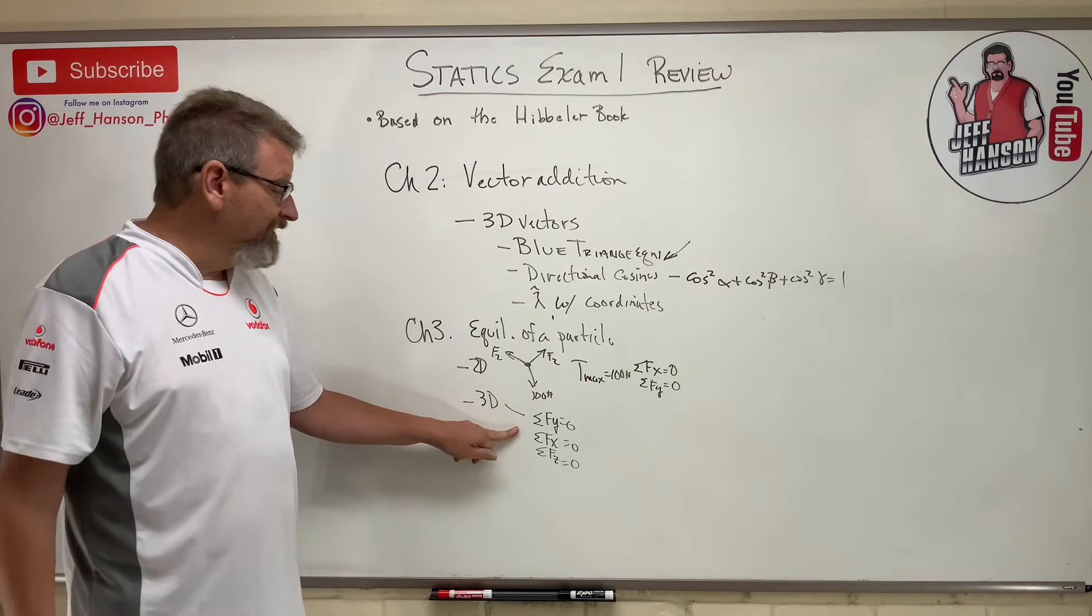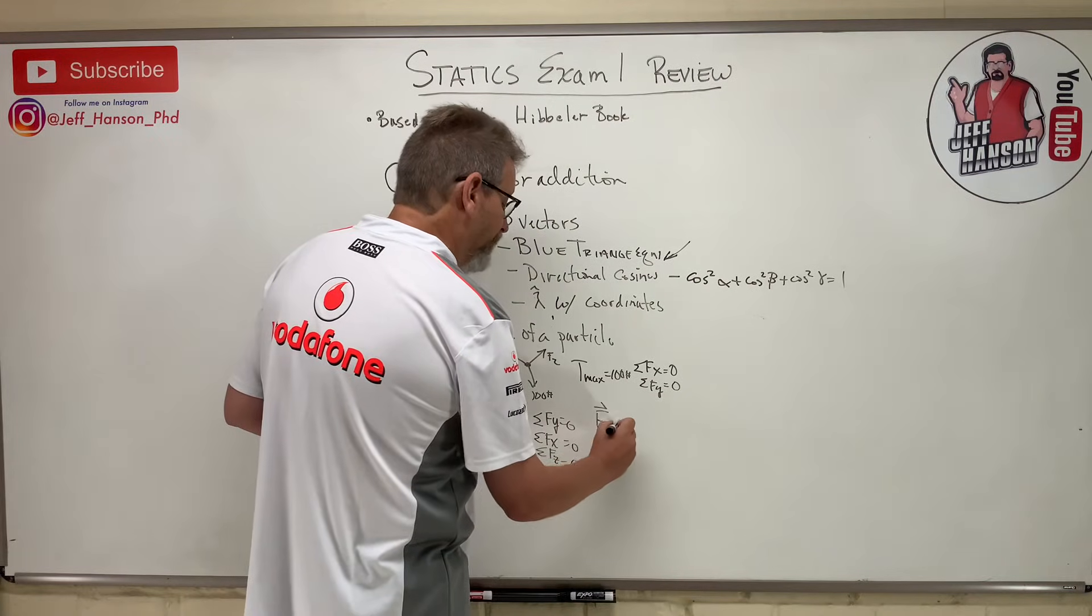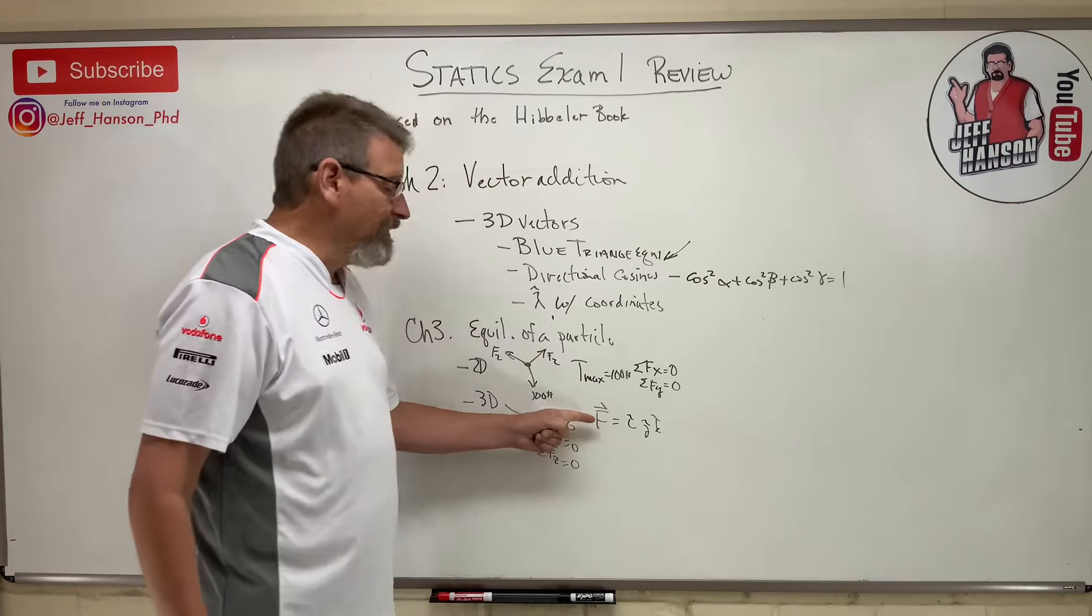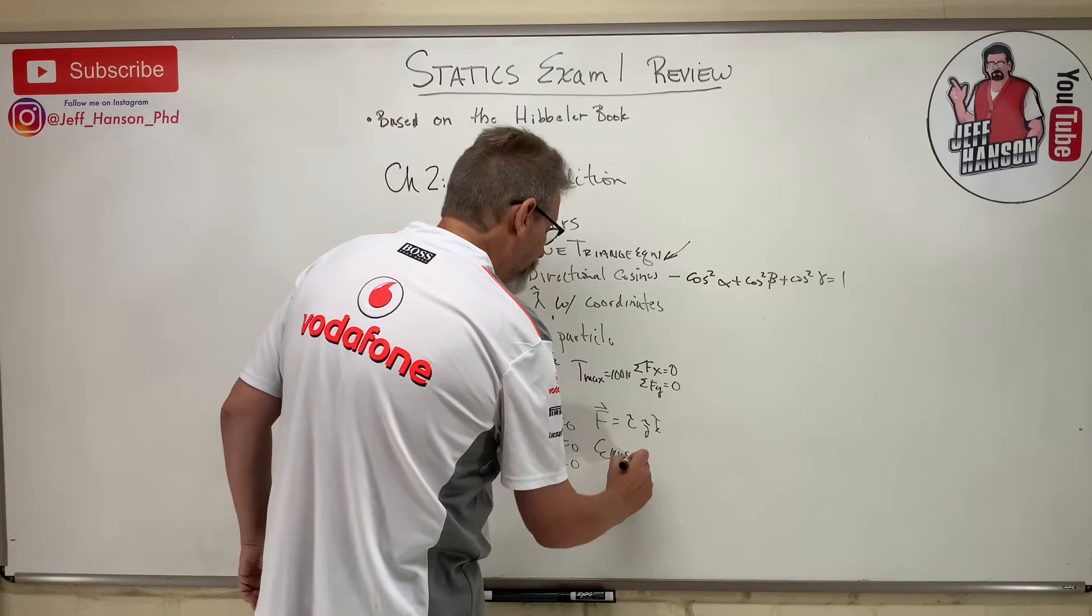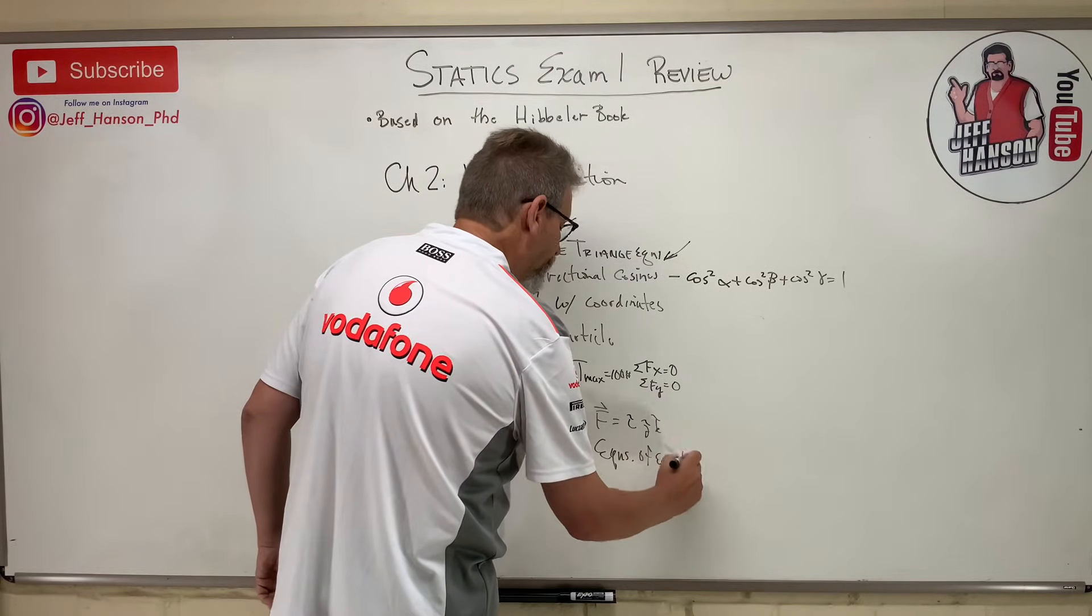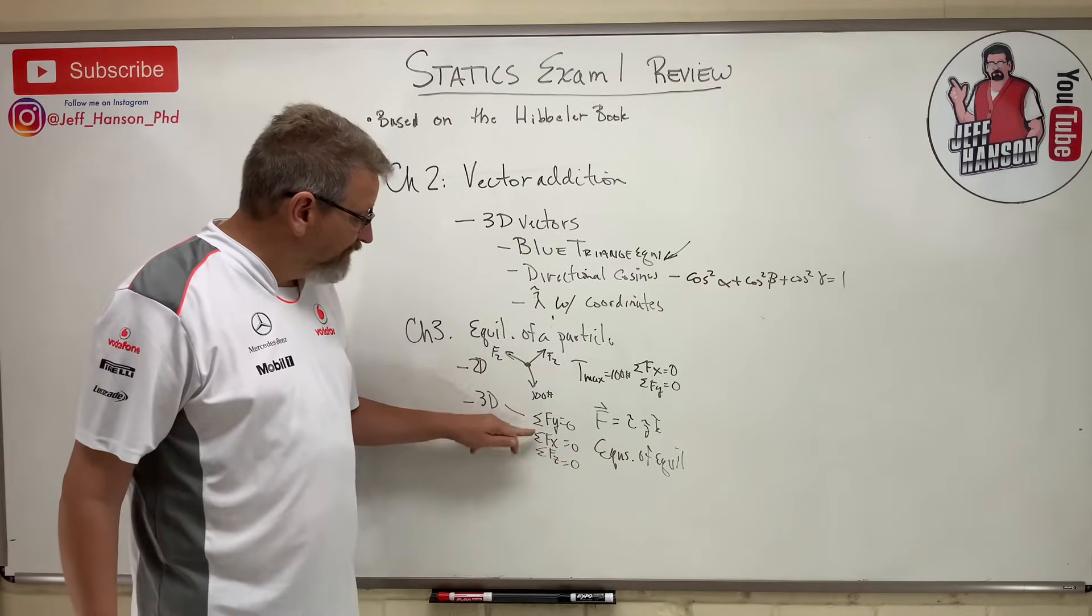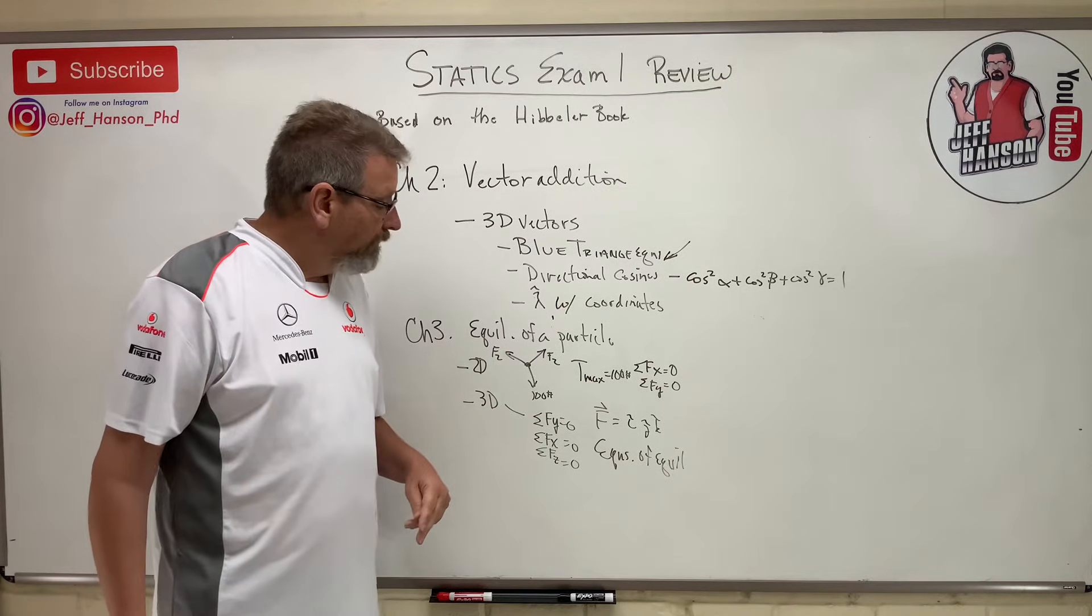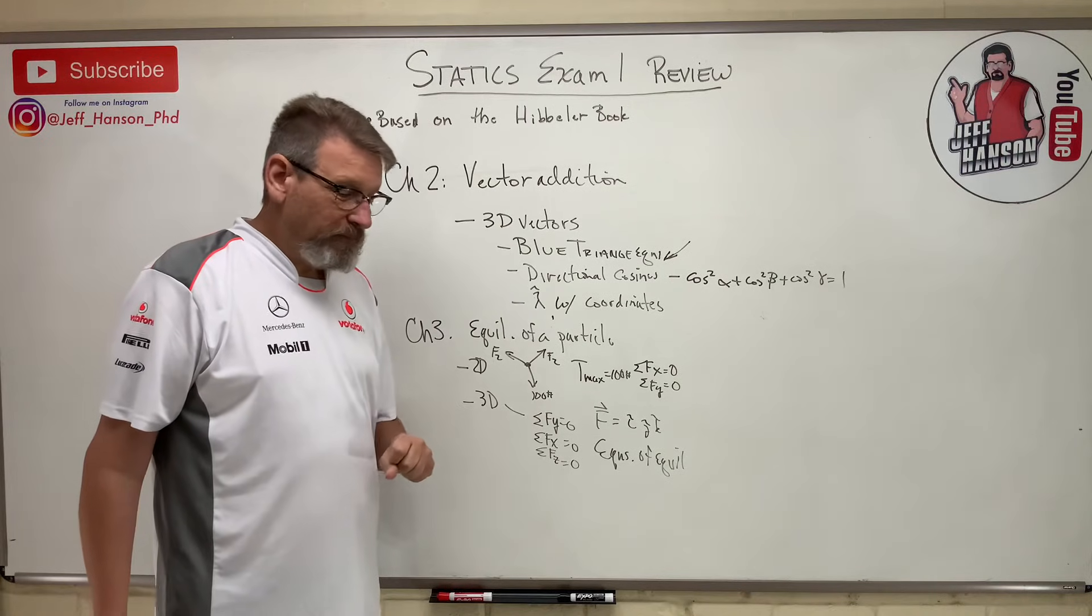So in 3D I had three equations. You remember, we wrote first all the vectors in vector form, in i, j, k form. Then once you have all the vectors written in that form, build your equations of equilibrium. Once you have your equations of equilibrium, you can use your system solver to solve that three by three set of equations. That was chapter three.